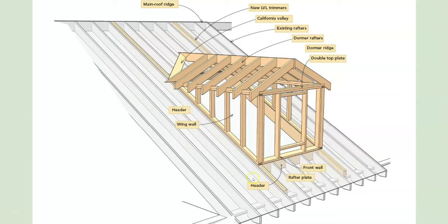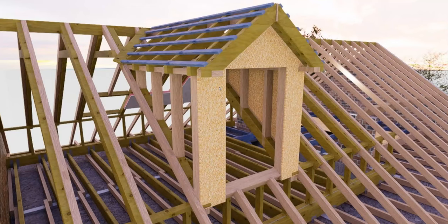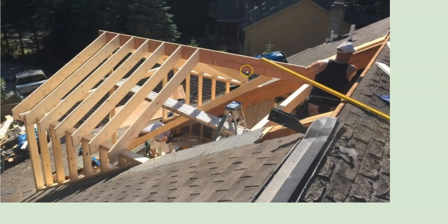This is one way to frame gable dormers. You have your wing wall, which is called a wing wall because the studs are not all the same height — they get smaller as you go along. Then you have your framed window with typical wall framing, and then your rafters that sit up top. It's a little more difficult making one of these because of the complication of working on top of a roof, up in the air.